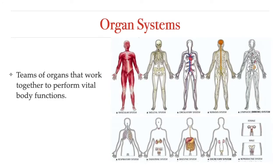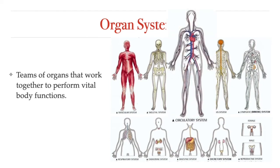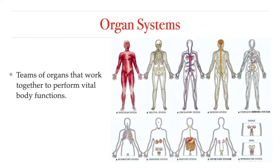Organs are grouped into organ systems — teams of organs that work together to carry out a particular function for the organism. For example, the heart and the blood vessels make up the circulatory system. They work together to circulate the blood, bringing oxygen and nutrients to cells throughout the body and carrying away carbon dioxide and metabolic wastes. To help us understand how our bodies work, it helps us to divide them into these organ systems, and that's what we're going to do next.